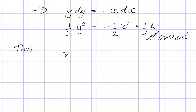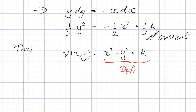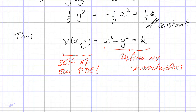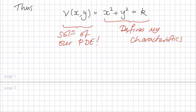Rearranging, we get mu of x and y equals x squared plus y squared, and this equals a constant. This defines my characteristics. So if I want to plot the characteristics of this problem, I simply plot the curves given by x squared plus y squared equals k — these are circles. This also tells us that mu is a solution of our PDE.